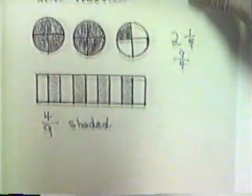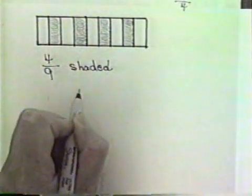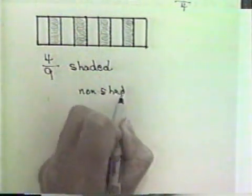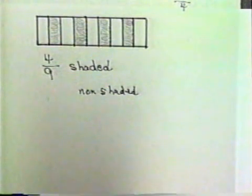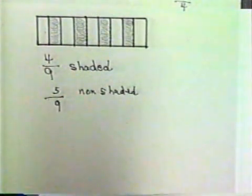Now, if I was also interested in the part that wasn't shaded, sometimes you're asked to tell the non-shaded part. What fraction is represented by the non-shaded part? Well, if I wanted to talk about the non-shaded part, I would count the things that weren't shaded: one, two, three, four, five parts are not shaded out of a total of nine parts. So we have four-ninths shaded, five-ninths non-shaded. If you put the four-ninths and the five-ninths together, you'd have nine-ninths or the whole thing.